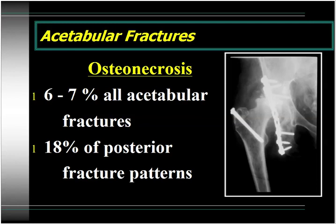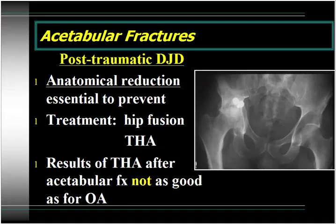Osteonecrosis occurs in 6 to 7% of all acetabular fractures; however, if you look just at posterior fracture patterns, the incidence approaches one in five. Post-traumatic degenerative joint disease is the most common complication of acetabular fractures. It can occur even with anatomical reduction, but if you do not have an anatomical reduction, it will occur virtually 100% of the time. If the patient develops this complication, treatment options include hip fusion — increasingly less frequently used — or total hip arthroplasty. Remember that results of total hip replacement after acetabular fractures are not as good as total hips done for osteoarthritis, analogous to doing a total knee after tibial plateau fracture versus for osteoarthritic indications.